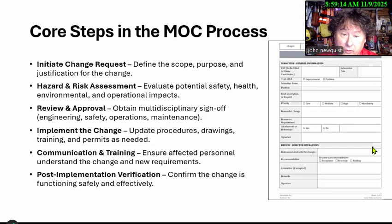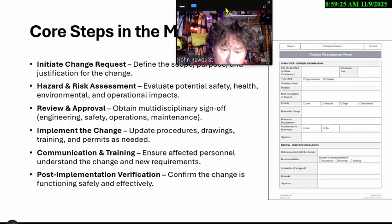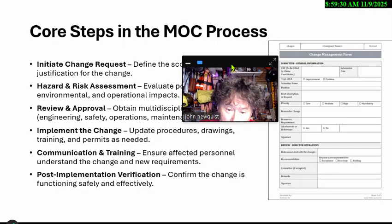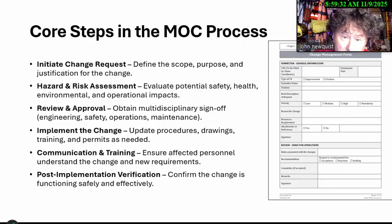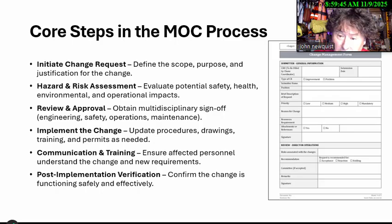Looking at the management of change form — it can be a simple form covering the reasons for the change, description of the impact, and everything that will be involved. It includes the reasons, the signatures — usually two levels of signatures. We initiate a change request because we're going to change a process, procedure, bigger or smaller equipment, etc. Then we look at the safety, health, and operational impacts, and the people involved.